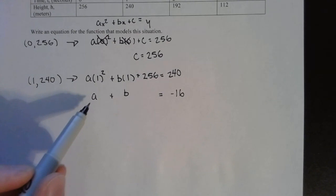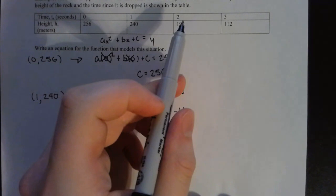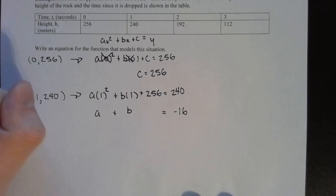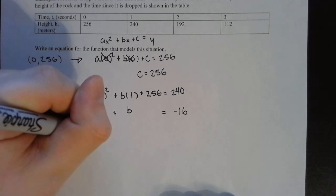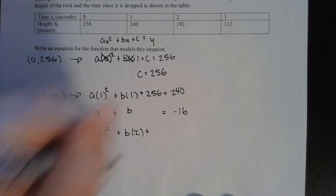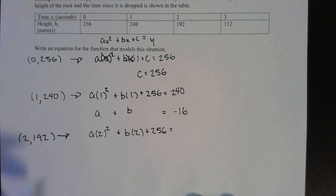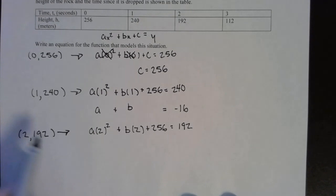So to make it a system, we need to do another equation here. We have two unknowns left. We don't know what a, we don't know what b is. So if we use one more coordinate, we're going to use 2, 192. Then we can come up with one more equation that we can use to solve our system. So now I'm plugging in 2 for x and 192 for y. Again, I know c is 256 and y is 192.